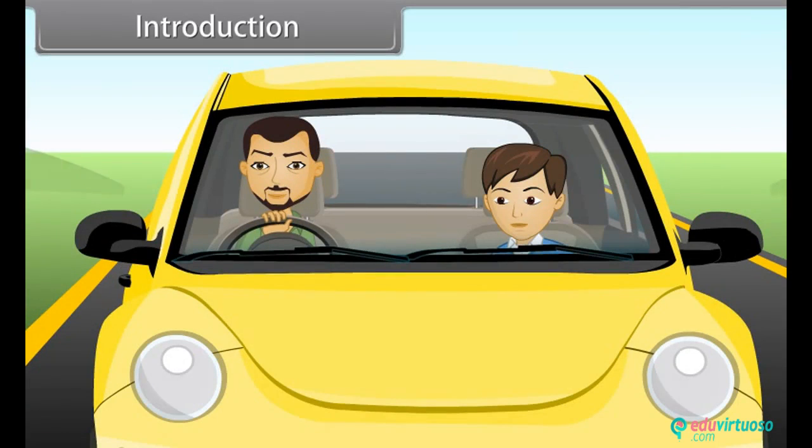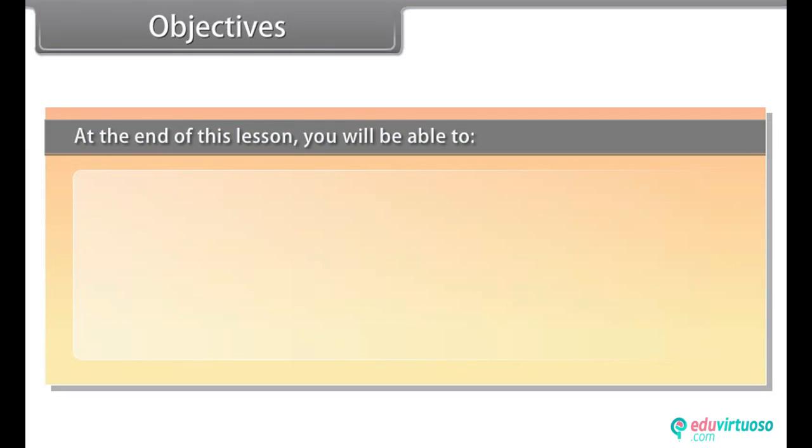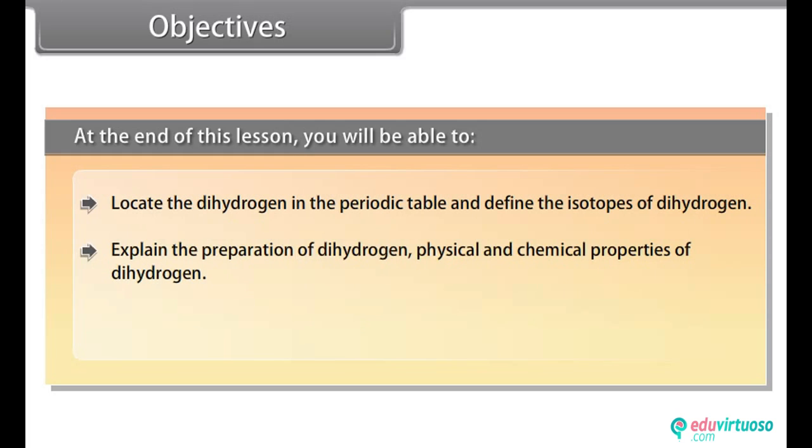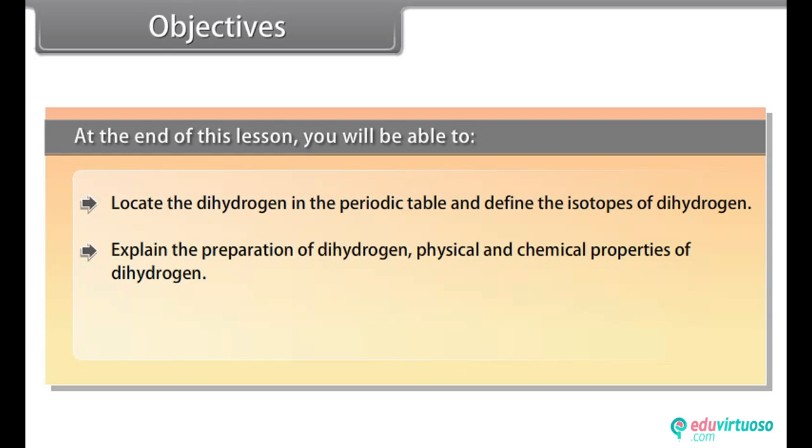In this lesson, you will learn hydrogen and its compound. Objectives: At the end of this lesson, you will be able to locate the dihydrogen in the periodic table and define the isotopes of dihydrogen. Explain the preparation of dihydrogen, physical and chemical properties of dihydrogen. Explain hydrides, position of hydrogen in the periodic table.